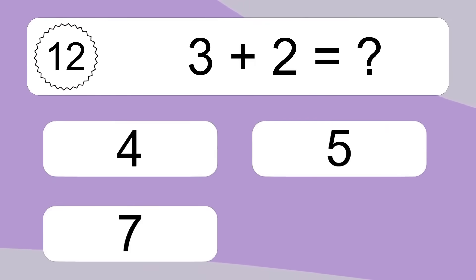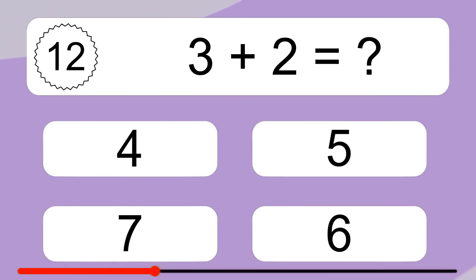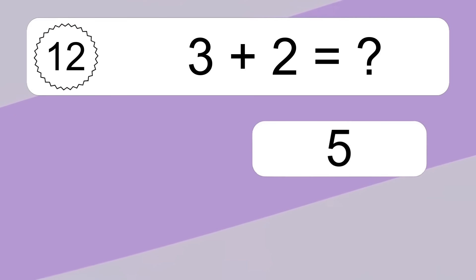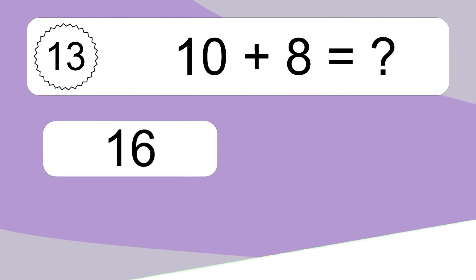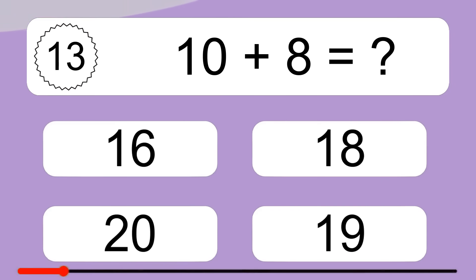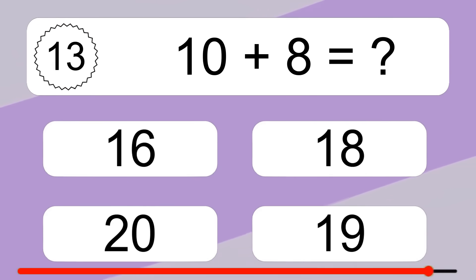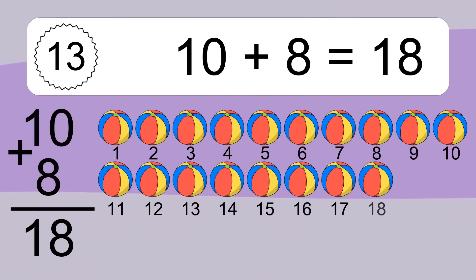3 plus 2 equals what? 3 plus 2 equals 5. Let's count it: 1, 2, 3, 4, 5. 10 plus 8 equals what? 10 plus 8 equals 18. Let's count it: 1, 2, 3, 4, 5, 6.